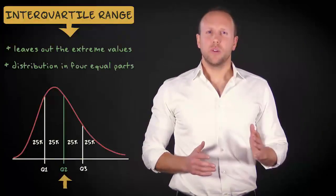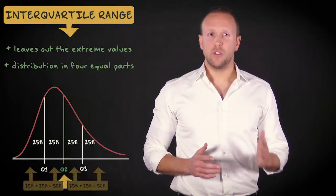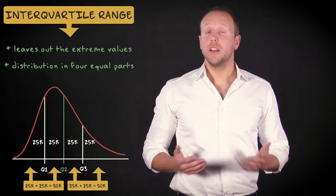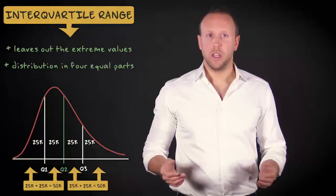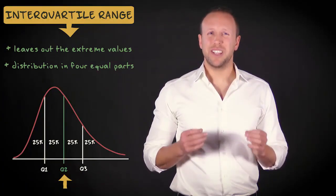As you can see, the second quartile divides the distribution in two equal parts. After all, 50% of the values is below this value, and 50% lies above the value. Q2 is therefore the same as the median.